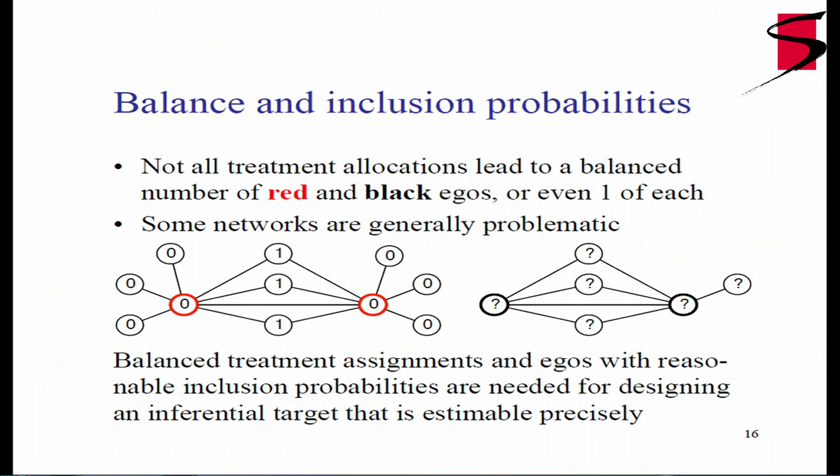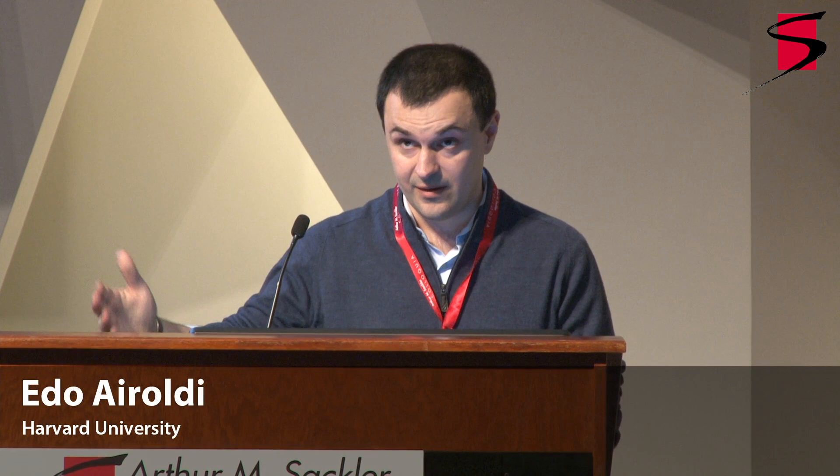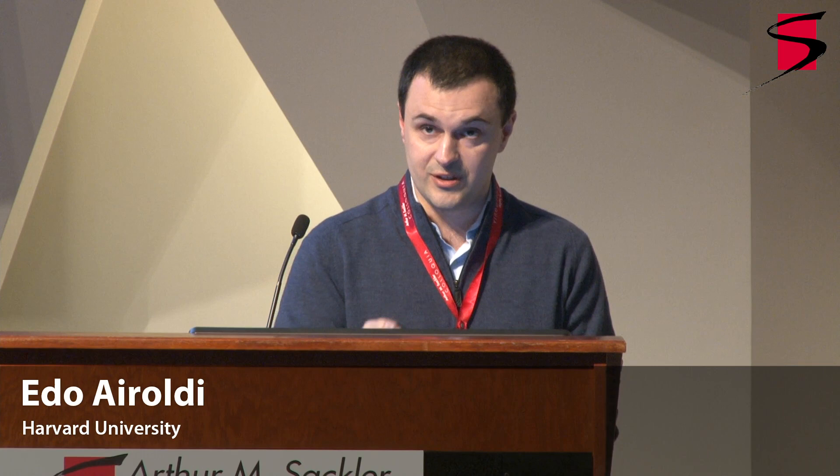There's another set of restrictions: not all treatment allocation vectors lead to a balanced number of exposed and control egos, or even one of each. In one cartoon network example, a particular bold Z vector gives only two egos that are both treated — none is in control, so the difference is not defined. Some networks are generally problematic; in another cartoon network it's actually impossible to find the randomization needed. The point is that balanced treatment assignments and egos with reasonable probability of being included in the inferential target are needed for designing estimable quantities of interest.